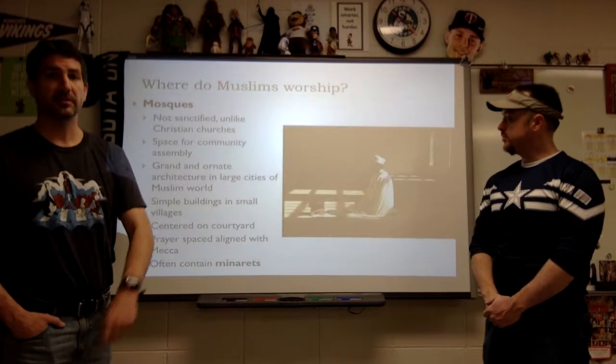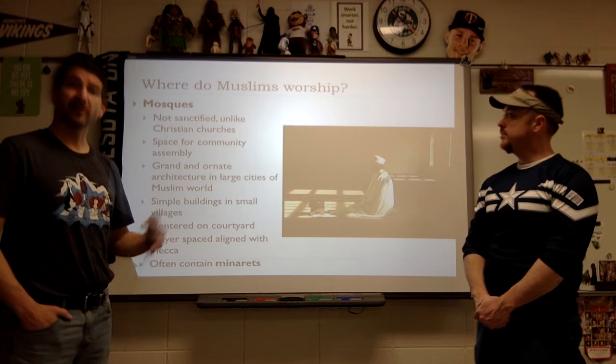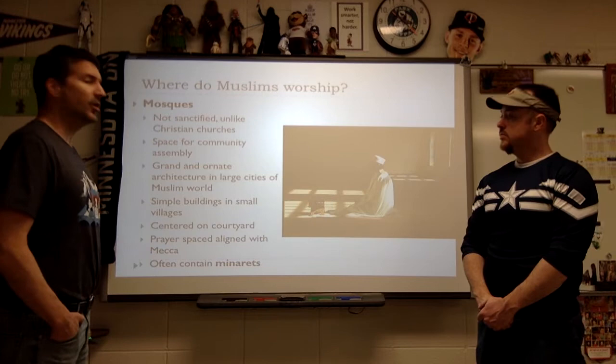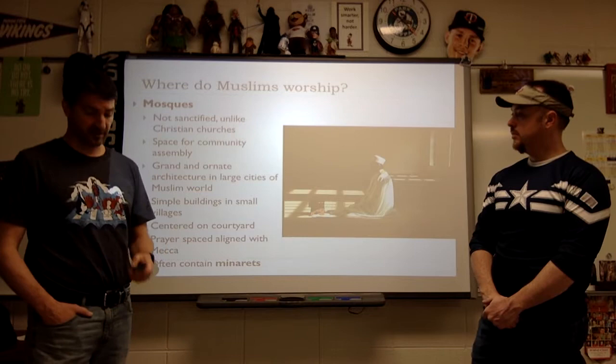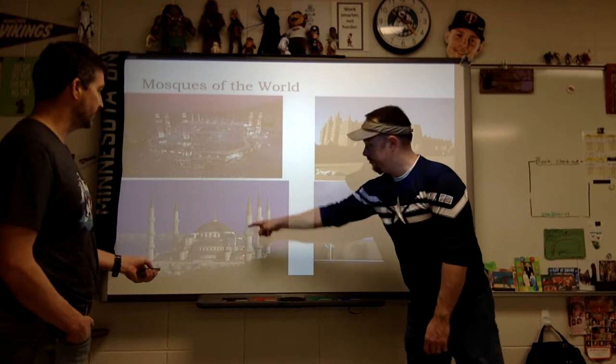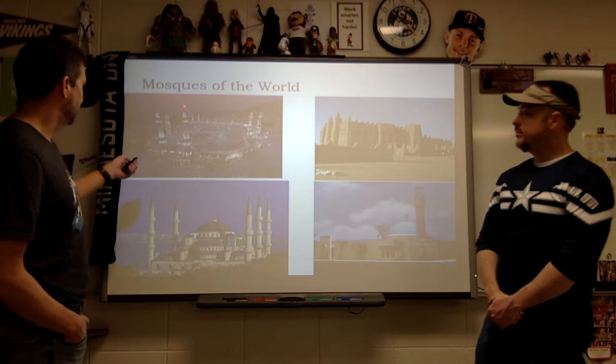Mosques are also going to range from very big and ornate to very simple in rural areas. The space is arranged towards Mecca — that's a big feature in mosques. There's a central courtyard, the prayer space is aligned, and then the minaret is huge. That's an AP concept that comes up. The minarets are the spires — the call to worship. There's also the great temple with the Kaaba.